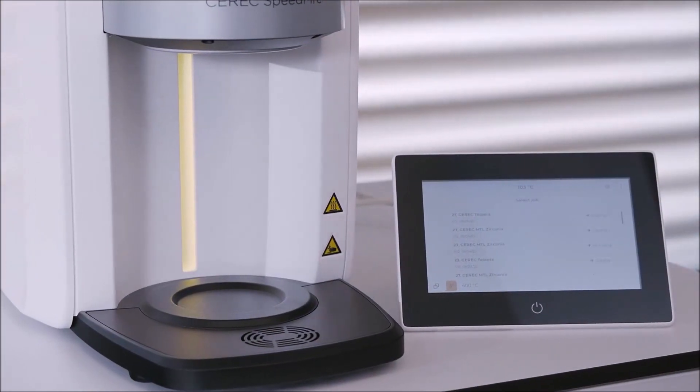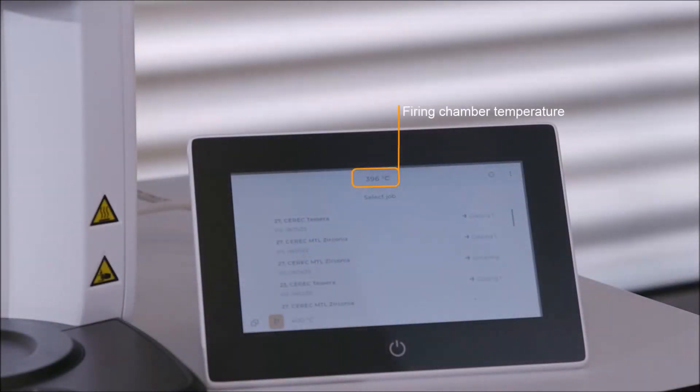At the top of the screen, the preheating status and the current firing chamber temperature are displayed. Depending on the initial temperature, the preheating process takes a maximum of 1 minute 30 seconds. The temperature of 400 degrees Celsius will be maintained for 30 minutes.